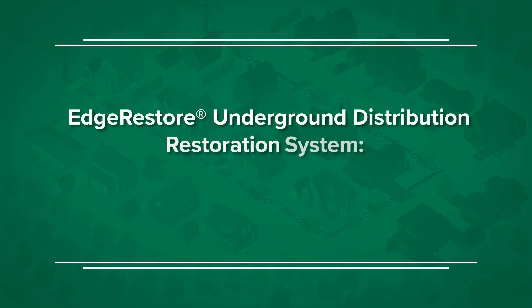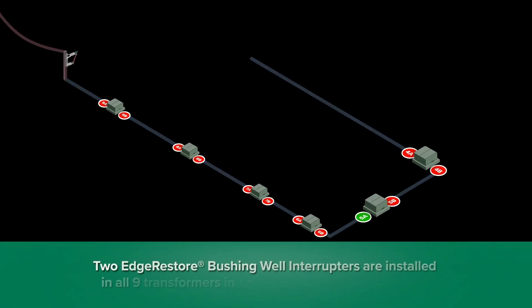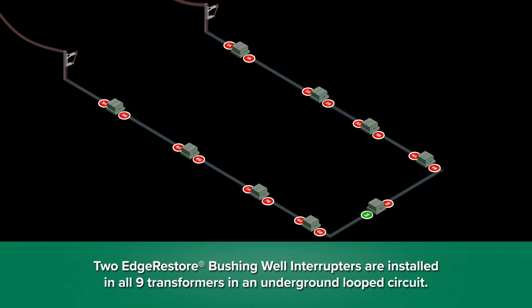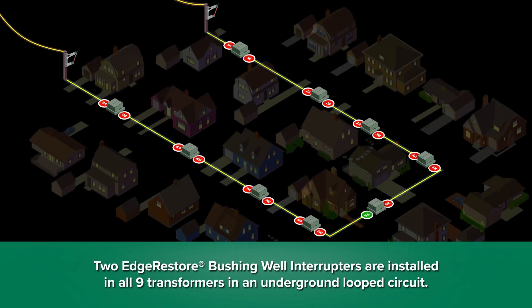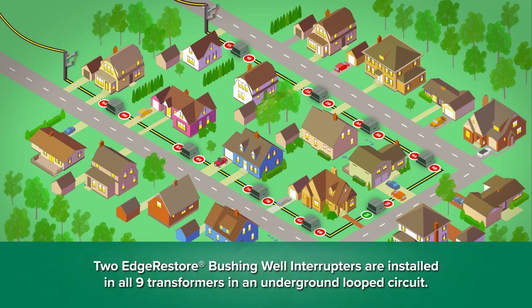Edge Restore Underground Distribution Restoration System: Cable Fault with a Fuse. Two Edge Restore bushing well interrupters are installed in all nine transformers in an underground looped circuit.